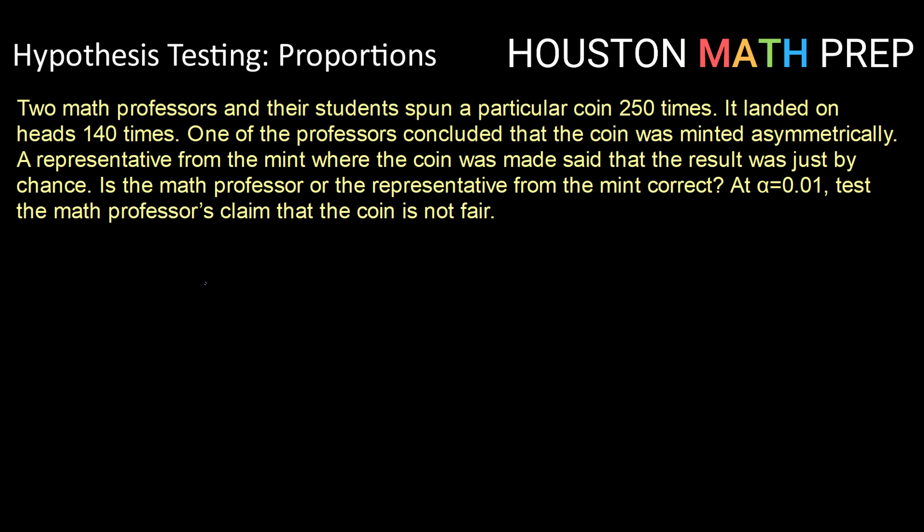Two math professors and their students spun a particular coin 250 times. It landed on heads 140 times. One of the professors concluded that the coin was minted asymmetrically. A representative from the mint where the coin was made said that the result was just by chance. Is the math professor or the representative from the mint correct?